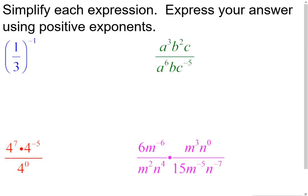What happens when I have a fraction raised to the negative one power? Same concept — take the reciprocal of the base. Here the base is 1 third. The reciprocal of 1 third is 3. So I have 3 to the first power, and since the exponent is 1 we don't need to write it. The answer is 3.